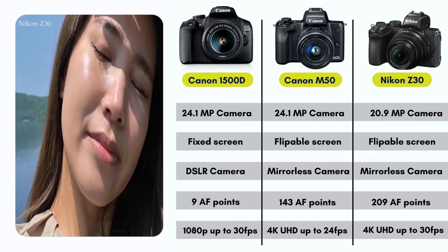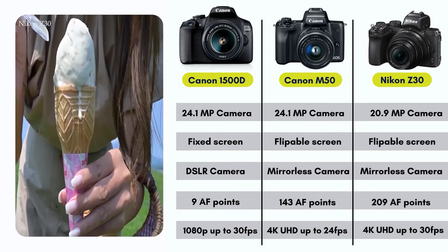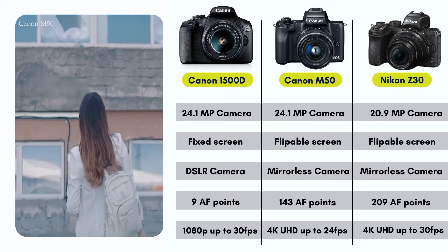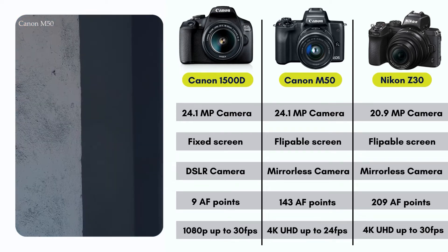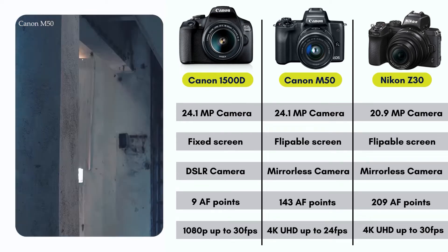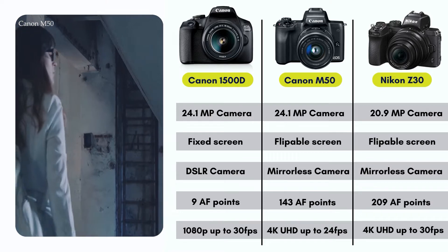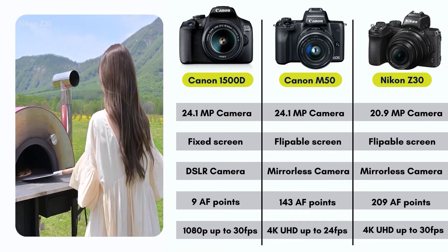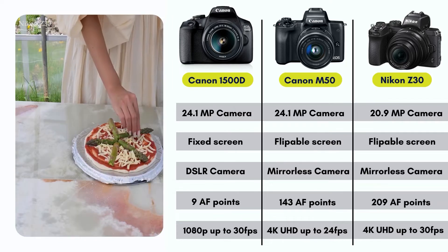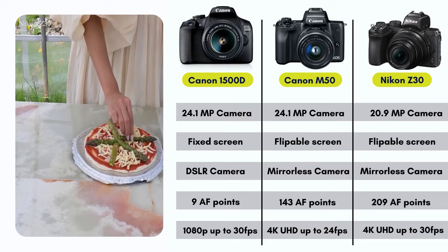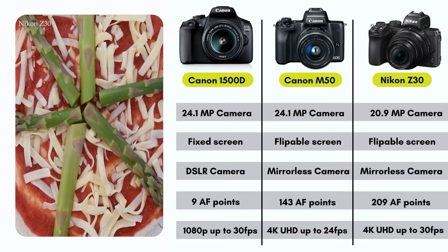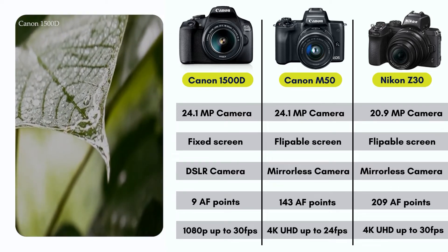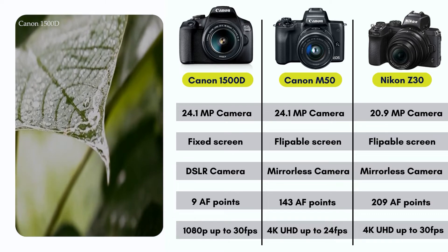Both the Canon 1500D and Canon M50 come with a 24.1 megapixel camera, and the Nikon Z30 comes with a 20.9 megapixel camera. The Canon 1500D comes with a fixed screen whereas both the Canon M50 and Nikon Z30 come with flippable screens. In terms of autofocus, the Canon 1500D comes with 9 autofocus points, the Canon M50 comes with 143 autofocus points, and the Nikon Z30 comes with 209 autofocus points.